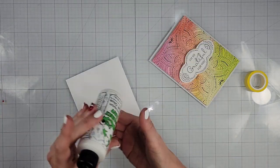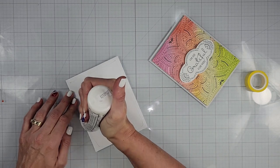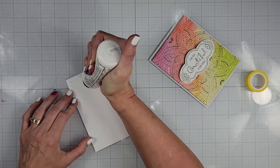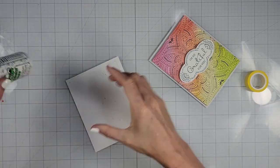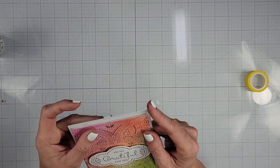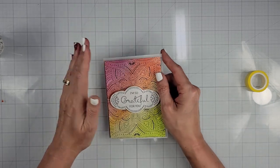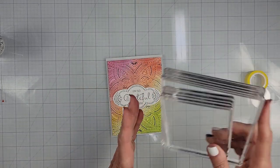And now I'm going to take, I'm going to adhere this to my top fold card base. Again, using my liquid glue. I don't use tape runner for much anymore. I just tend to like liquid glue. I'm going to get that put right on that card. And this is a great time to put something heavy on there.